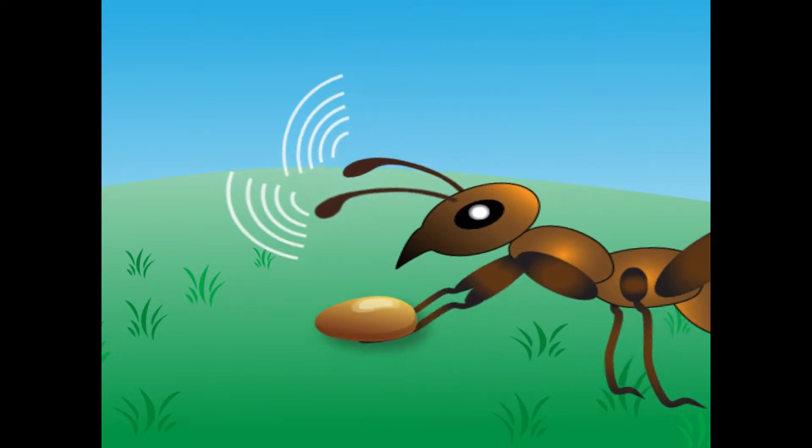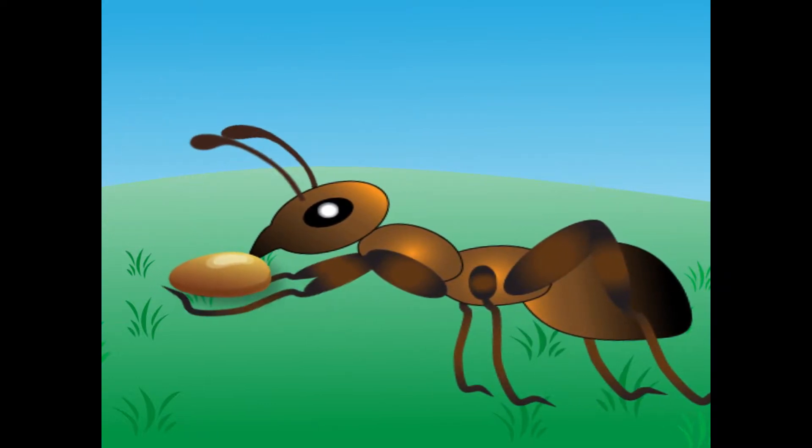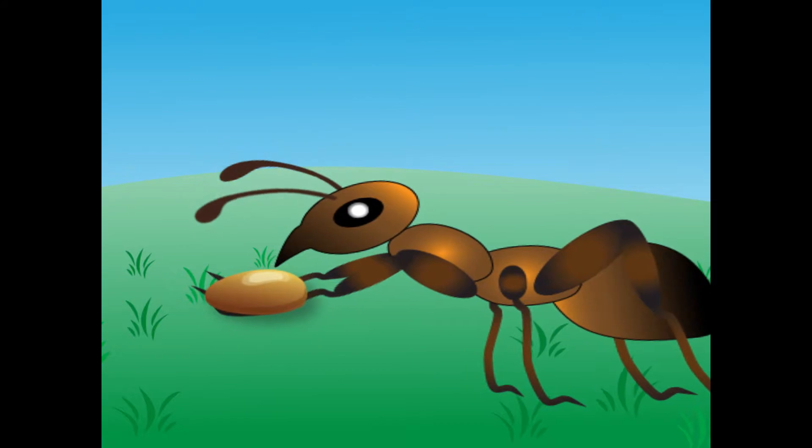Ants smell food by using their antenna. Ants eat a wide variety of things, including grass, leaves, grains, and seeds.